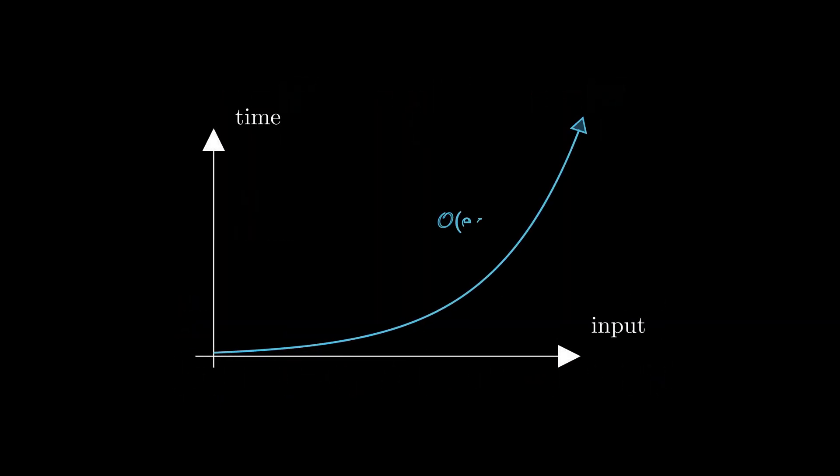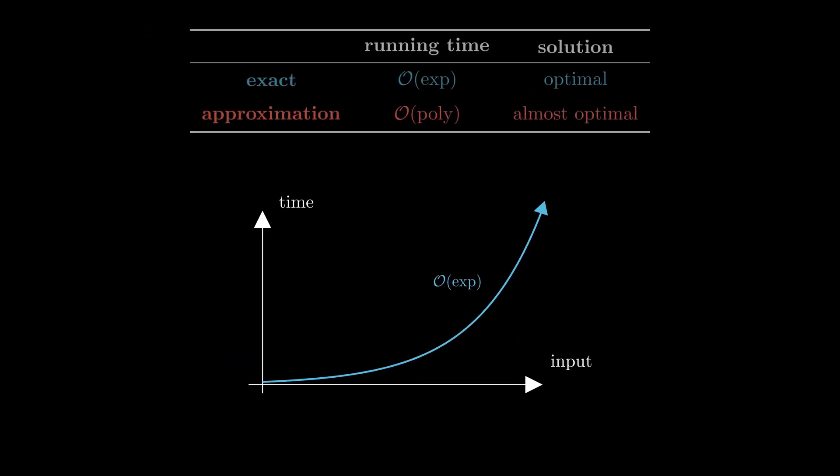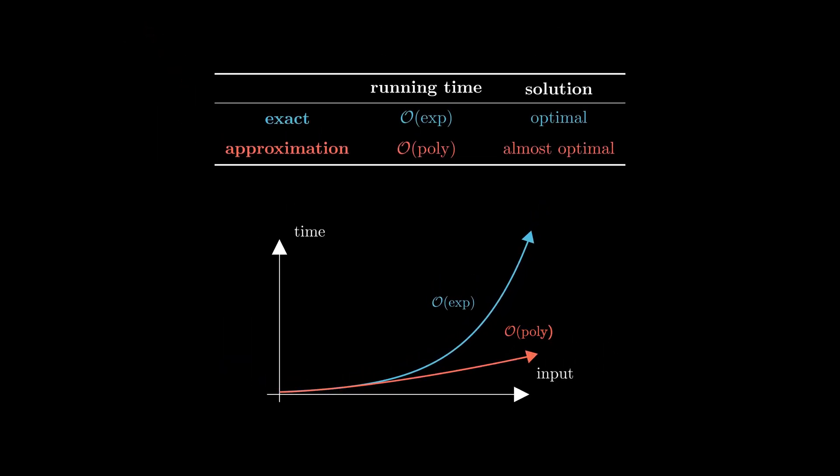SAT runs in exponential time, and so solving it for a large number of factories and products could take a few millennia. One thing we could do in cases like these is to use an approximation algorithm, which exchanges an improved running time for a solution that is close to, but not quite the optimum.